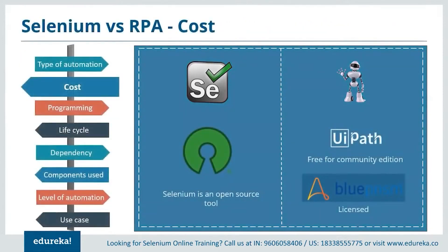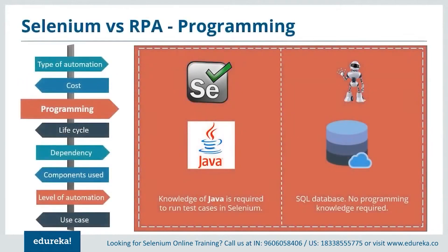Now let's talk about the cost of these tools. Selenium is an open source tool used to automate web applications. Whereas RPA has a set of tools like UiPath, Automation Anywhere, and Blue Prism. Among these, UiPath is free for the community edition and the advanced versions are licensed. Automation Anywhere gives you a free trial for a month and the advanced versions are also licensed.